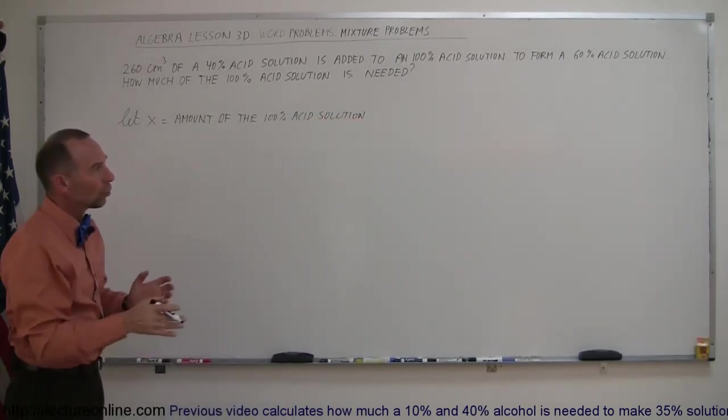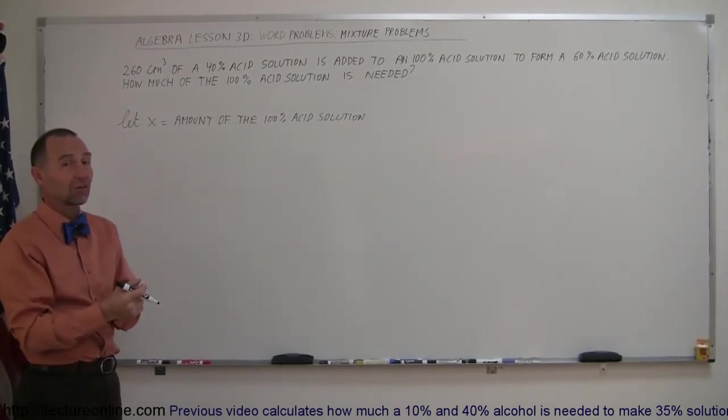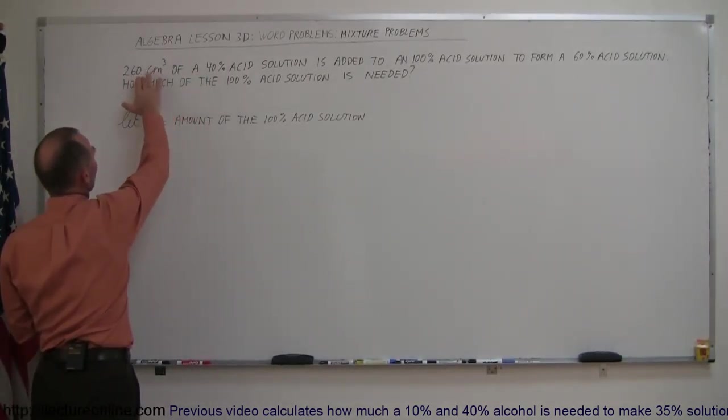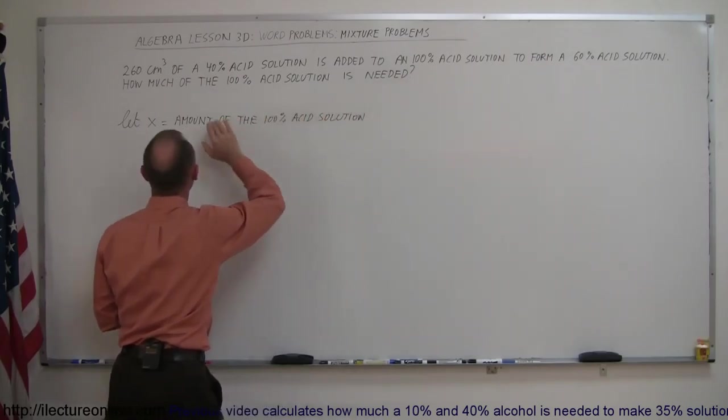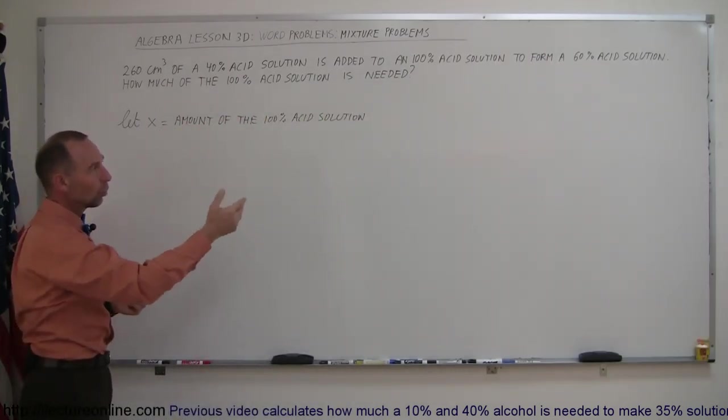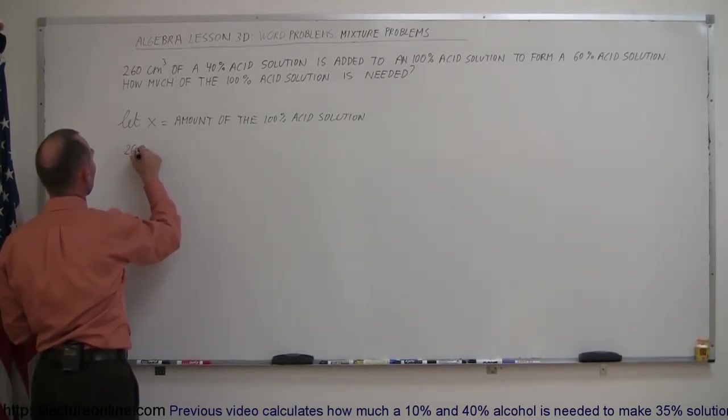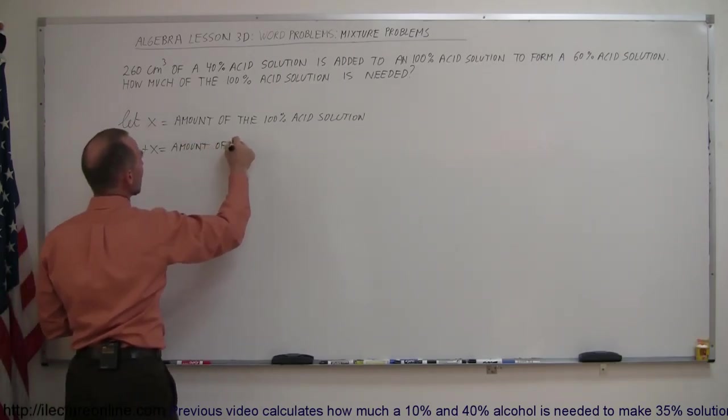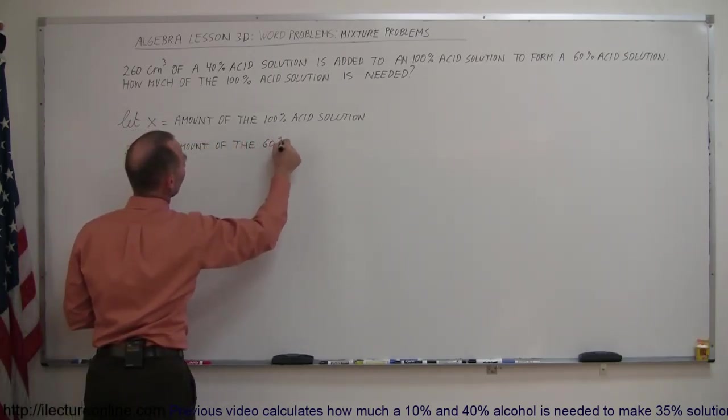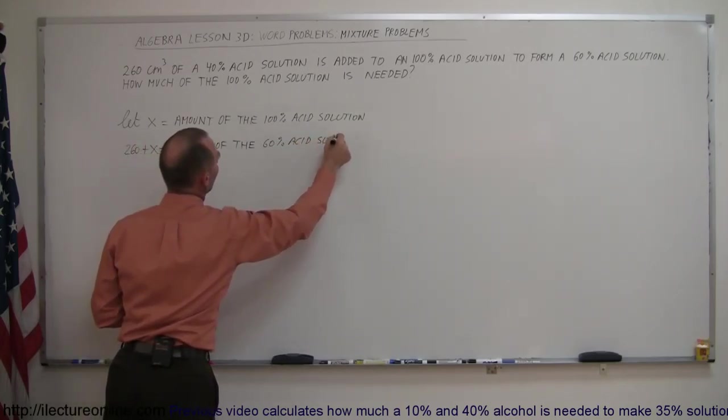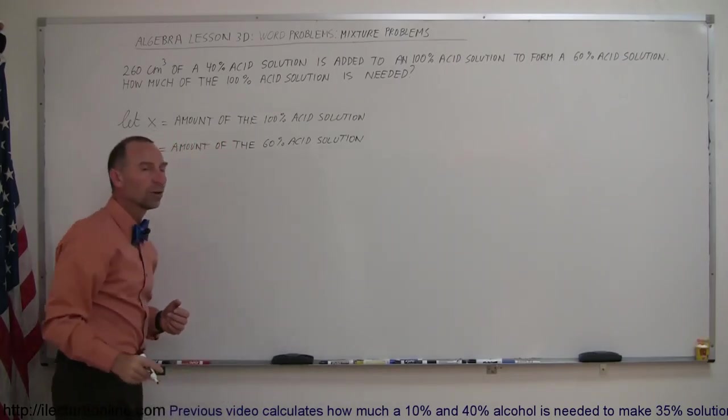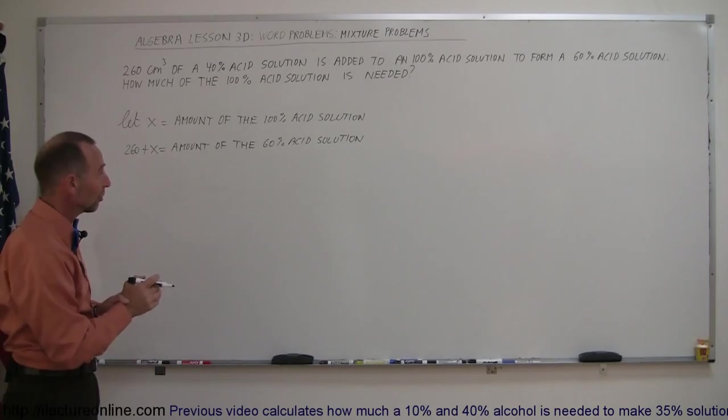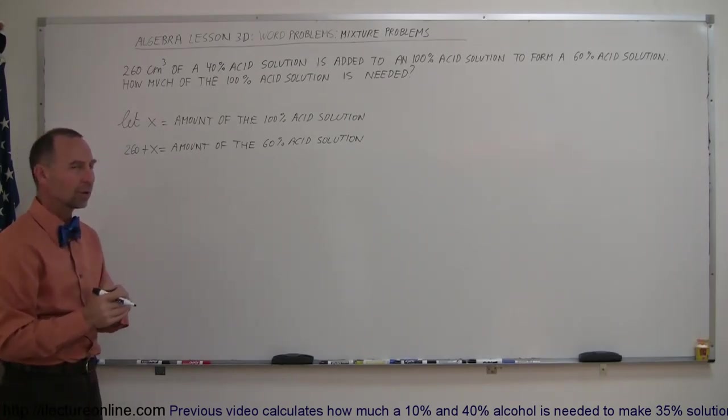Since they don't tell us how much of the total solution we end up with, they just tell us it's a 60% acid solution but not how much, we can assume that the amount of the 40% acid solution, which is given, plus the amount of the 100% acid solution, which we assume to be X, together add up to the total amount of solution. So we can say that 260 plus X equals the amount of the final or 60% acid solution.